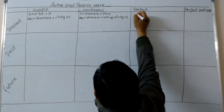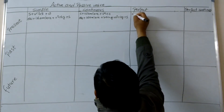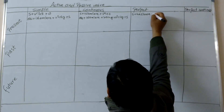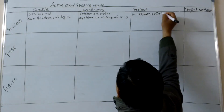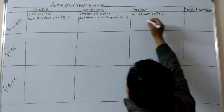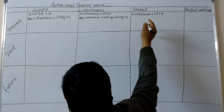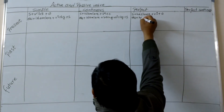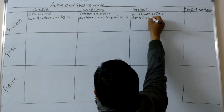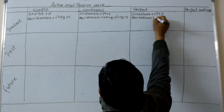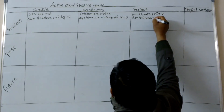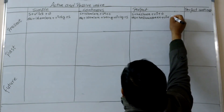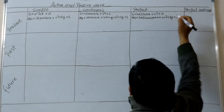In present perfect, the active voice formula is subject plus has or have plus V3 plus object. The formula of passive voice is object plus has/have plus been plus V3 plus by plus subject.